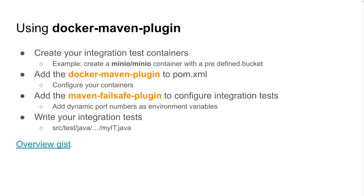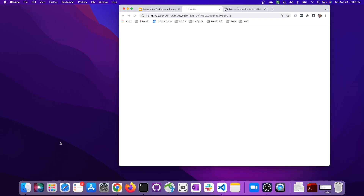So how do you use the Docker Maven plugin? First, you create your integration test containers with all the preset dependencies that you need. Next, you add the Docker Maven plugin to your pom.xml file, and inside the configuration for that plugin, you configure one or more containers that you wish to start. Next, you modify or configure the Maven failsafe plugin, which runs integration tests, and inside that plugin set up any environment variables that will link to the exposed container ports. Then lastly, you write your integration tests and be sure to use the environment variables that were created. Then run Maven verify or Maven install to execute the test suite.